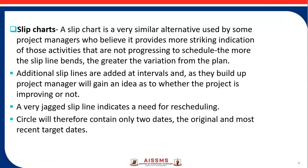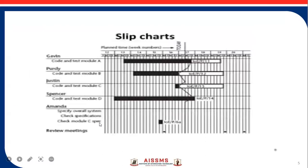A very jagged slip line indicates a need to reschedule the project, because many activities are not meeting their deadline — they are ahead of or behind schedule. In that case we need to reconsider the schedule. The circle will therefore contain only two dates: the original and the most recent target date. Here you can see the example of the slip chart — this is the more jagged slip line, indicating that we need to reschedule the particular planning of the project or of a particular activity.